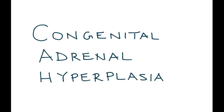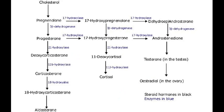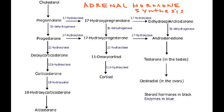Congenital Adrenal Hyperplasia, or CAH, is the topic, and the best way to talk about this is with a diagram. Here is a diagram of the adrenal hormone synthesis. As you can see, cortisol and aldosterone are two of the most important hormones synthesized in the body. CAH involves deficiency of an enzyme — in particular, 21-hydroxylase.